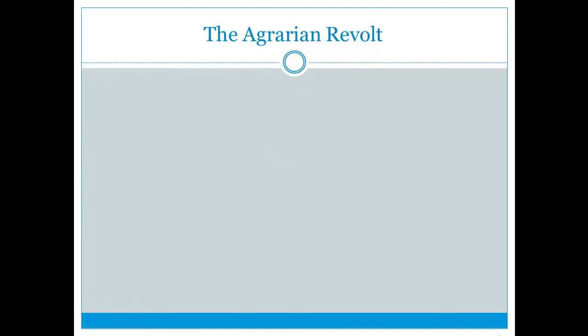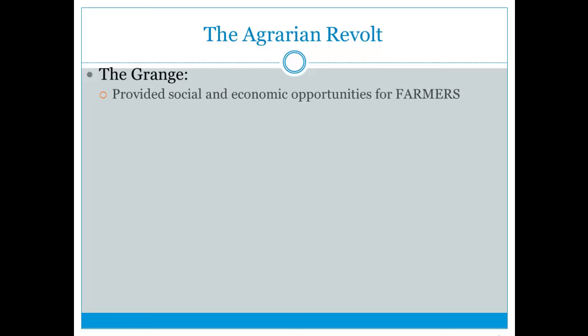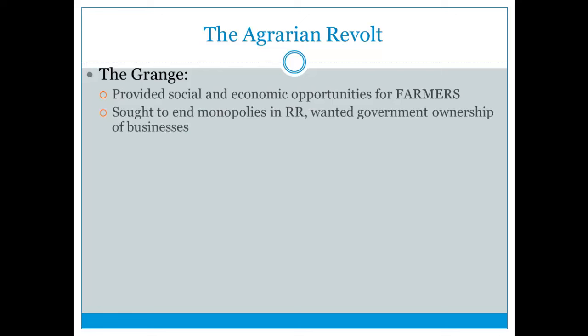Farmers got very upset during this time and formed organizations including the Grange, which provided social and economic opportunities for farmers. They hoped to end monopolies in railroads and wanted government ownership of businesses, especially railroads.